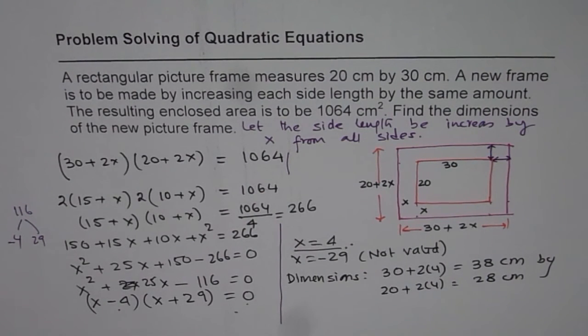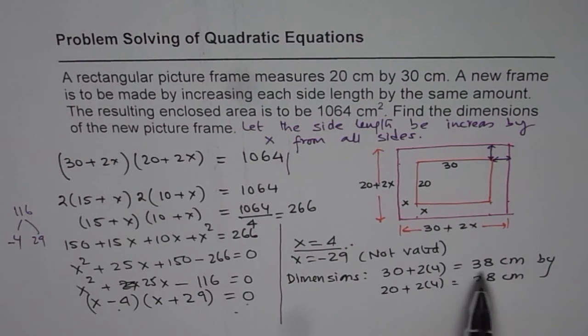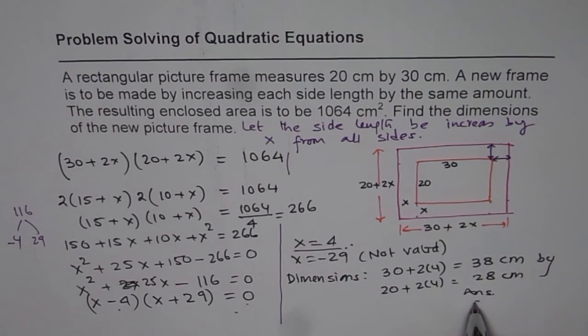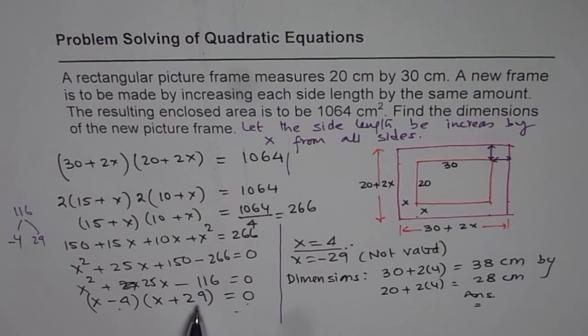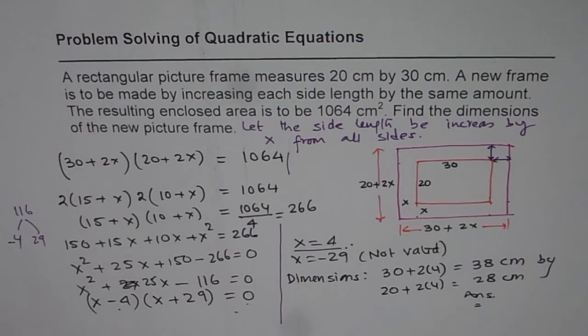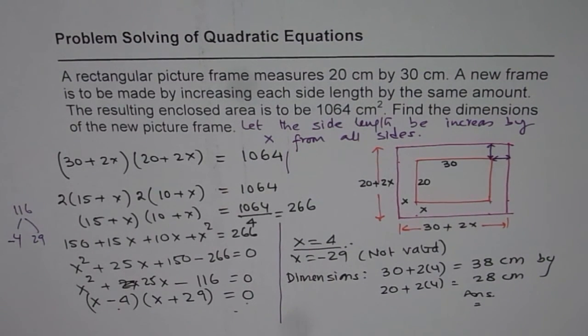Now reminder is that don't forget to write dimensions clearly as your answer. So that becomes your answer. And that is how you can do it. Now in case you find it difficult to factor, you can always use the quadratic formula and find your answer. So that is an alternate way of doing it. I hope that helps. Thank you and all the best.